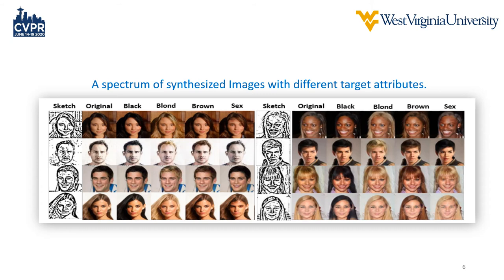This is a spectrum of our results. Our attributes were focused on hair color — black, blonde, and brown — and of course the sex of the individual. As we can see, these are very good results and we can see how we've been able to synthesize these realistic images.